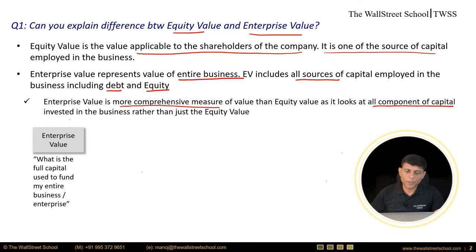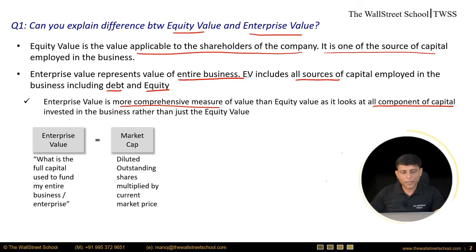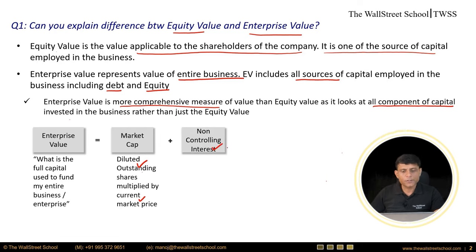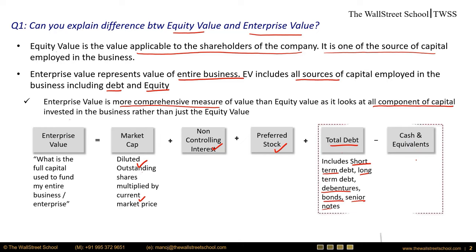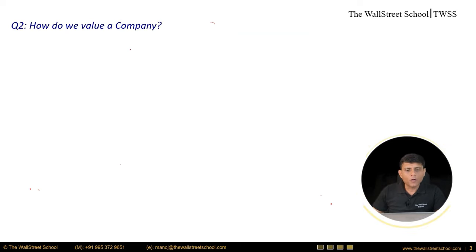Enterprise value equals market cap — which is the market value of total equity, calculated as diluted shares outstanding multiplied by current market price — plus non-controlling interest, plus preferred stock, plus total debt (which includes short-term debt, long-term debt, debentures, bonds, senior notes, and any other interest-bearing liabilities), minus cash and cash equivalents. Total debt minus cash and cash equivalents is also known as net debt.